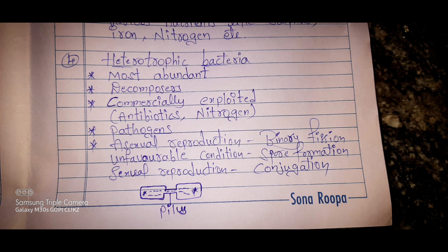The fourth class is heterotrophic bacteria. Heterotrophic means they cannot prepare their own food but depend on other organisms for food. These organisms are the most abundant on Earth. They are decomposers — they feed on dead and decaying organisms. They are commercially exploited by human beings to prepare antibiotics as well as for the preparation of nitrogen. These bacteria are also pathogens — that is, disease-causing organisms, and are highly dangerous.